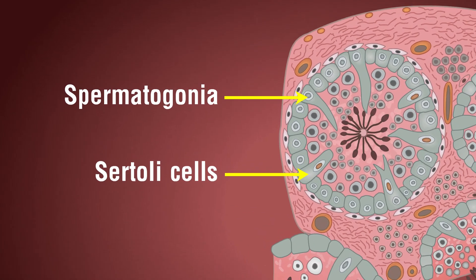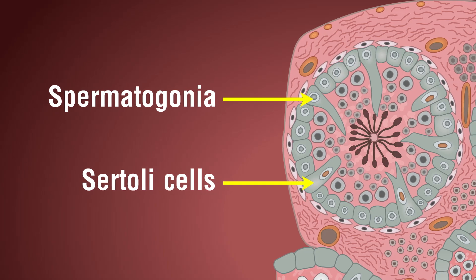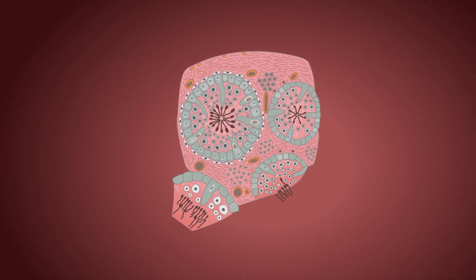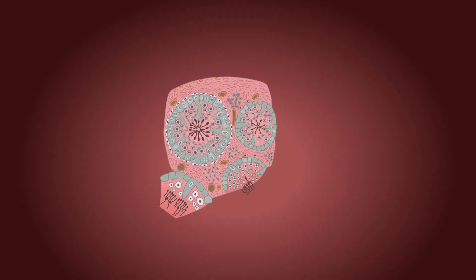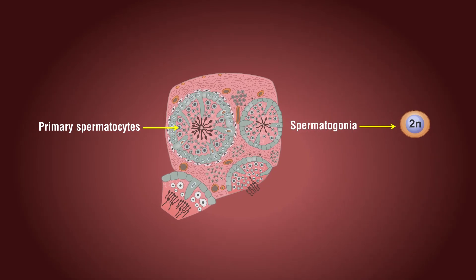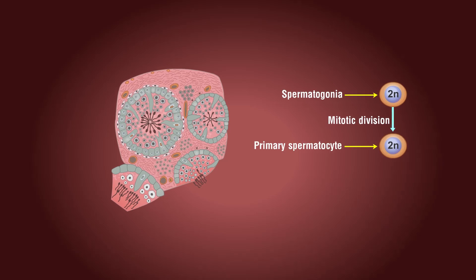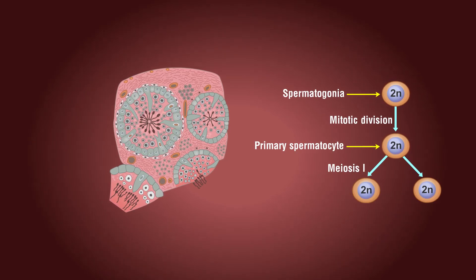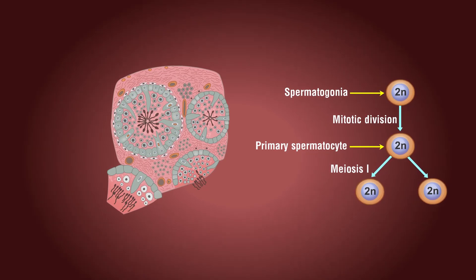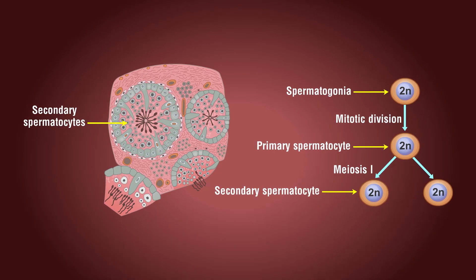The Sertoli cells are found between the spermatogonial cells and provide nutrition to these germ cells. The spermatogonia, or male germ cells, multiply by mitotic division and form primary spermatocytes. Each spermatogonium is diploid and contains 46 chromosomes. The primary spermatocytes periodically undergo meiosis and complete the first meiotic division, leading to the formation of two equal haploid cells called secondary spermatocytes, which have only 23 chromosomes each.